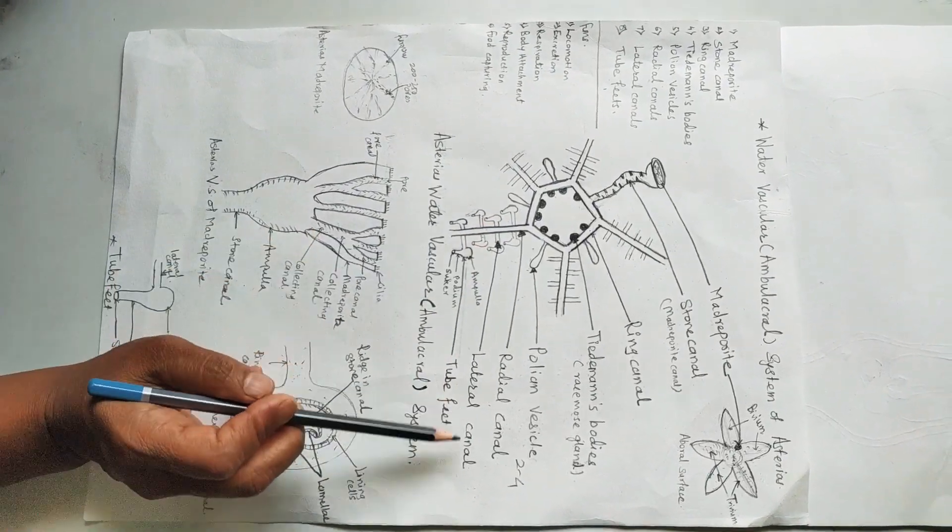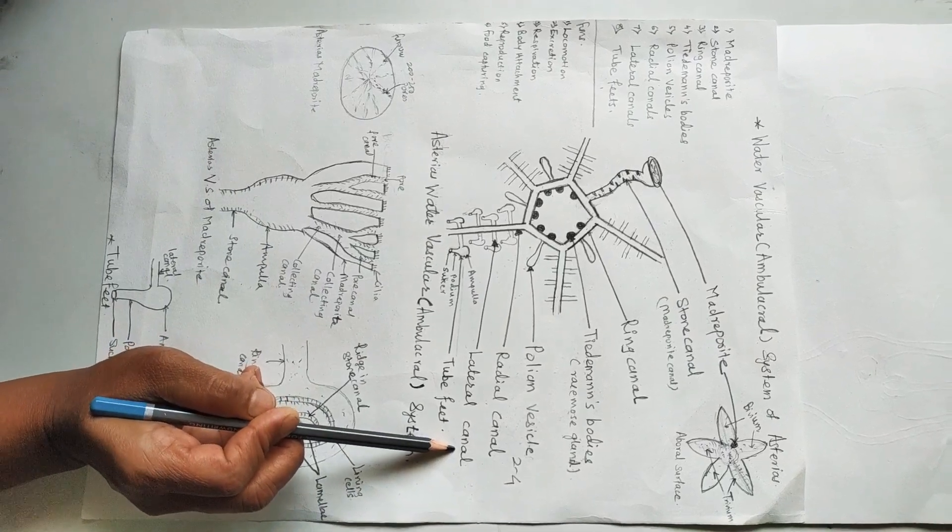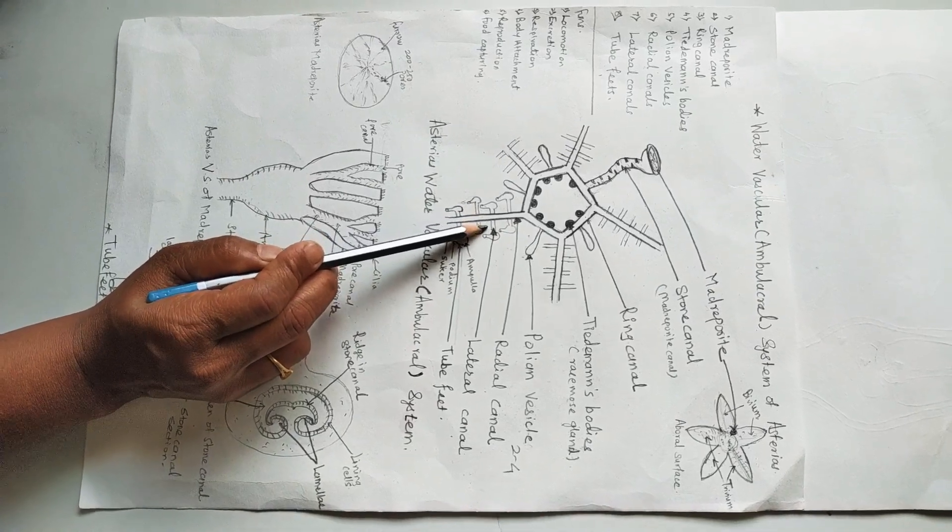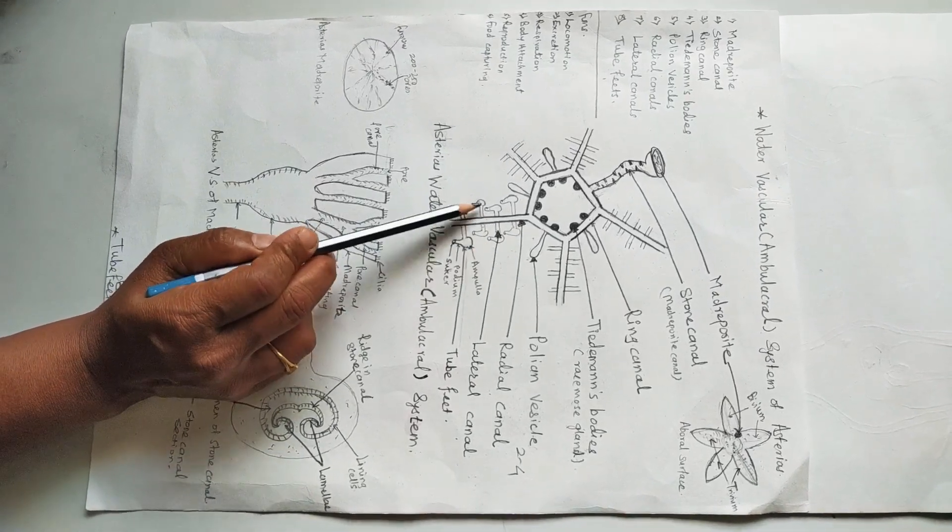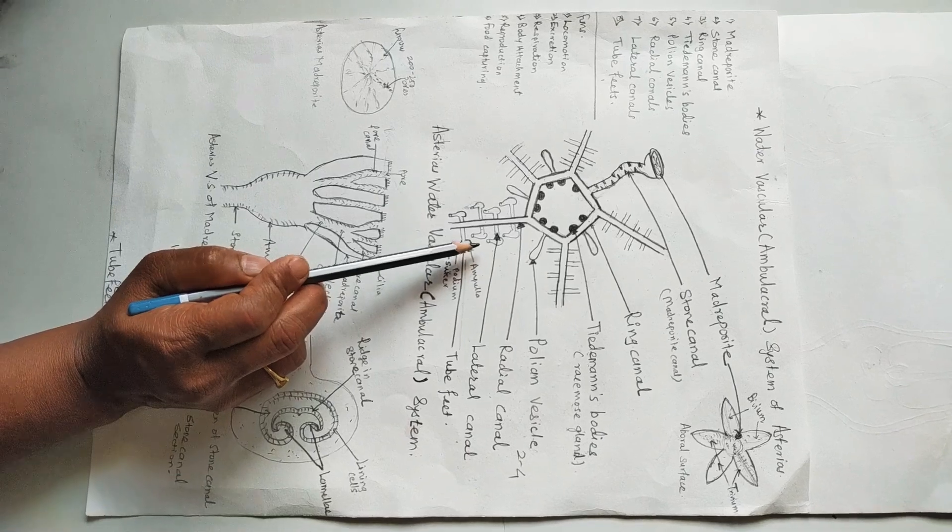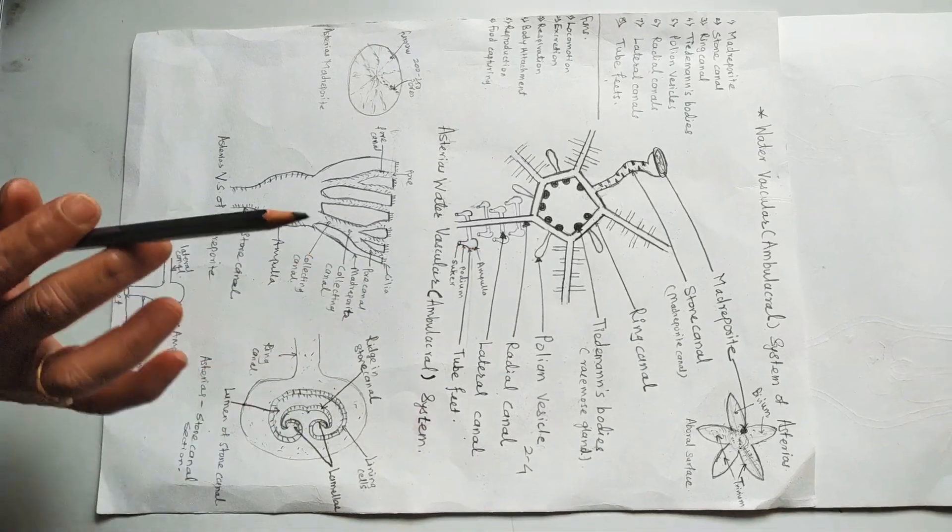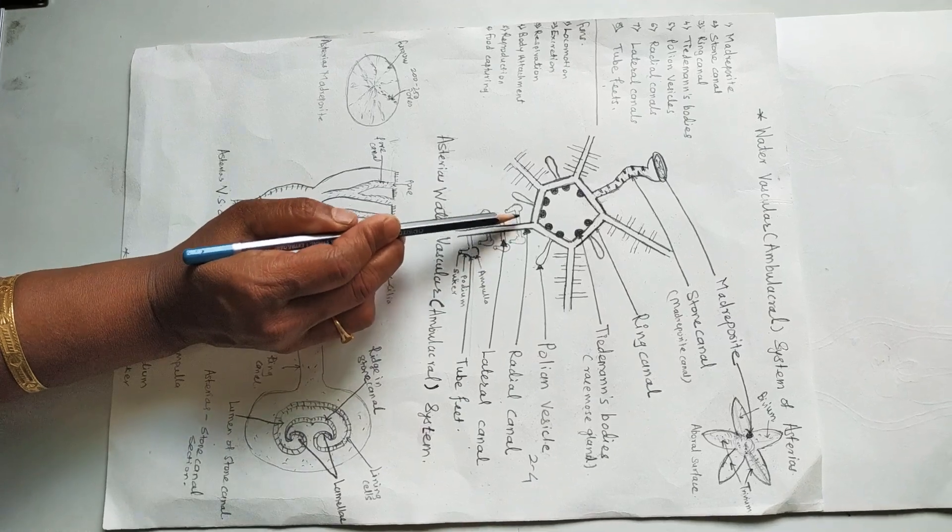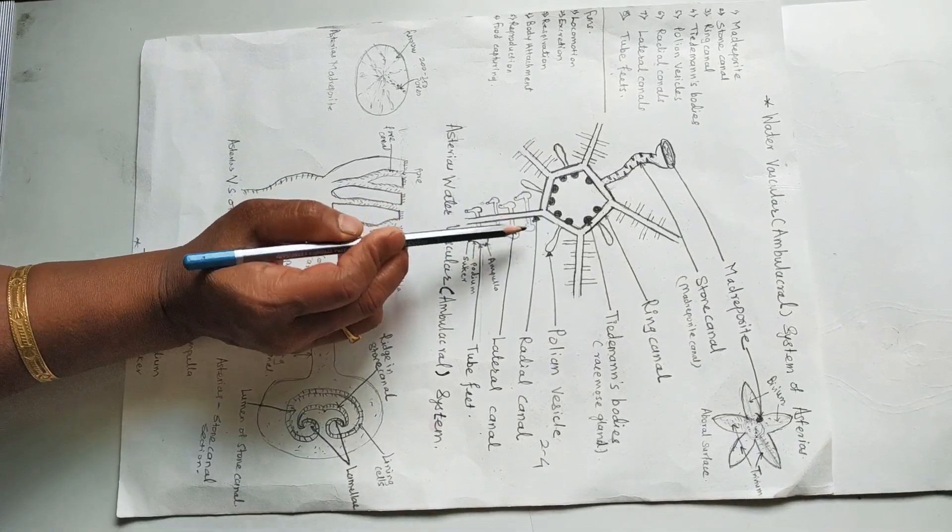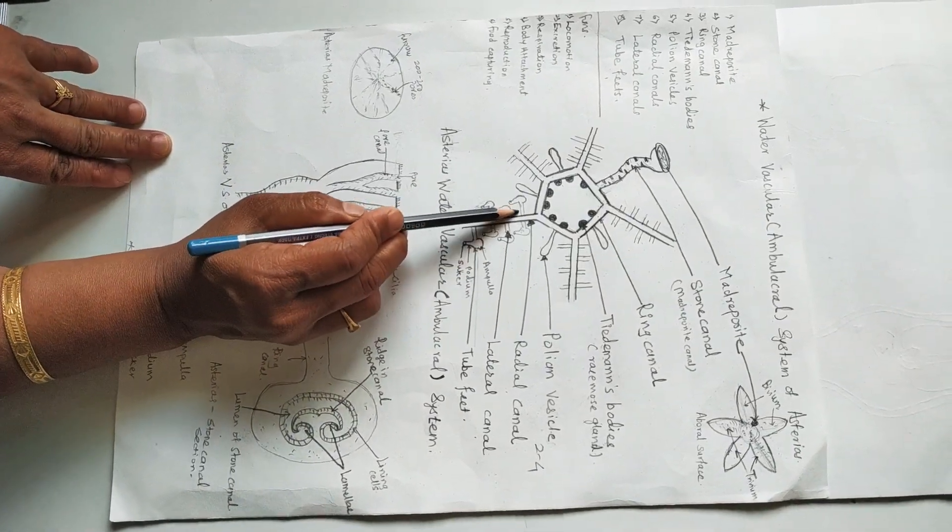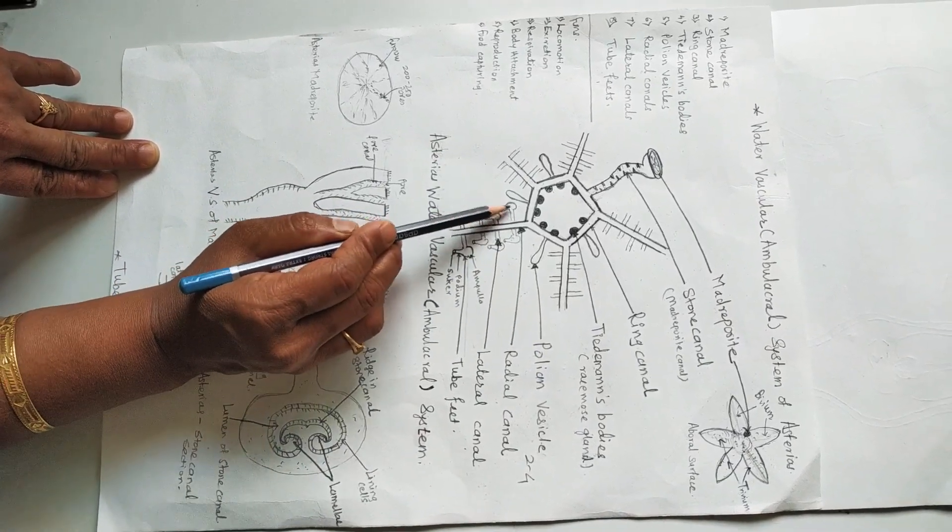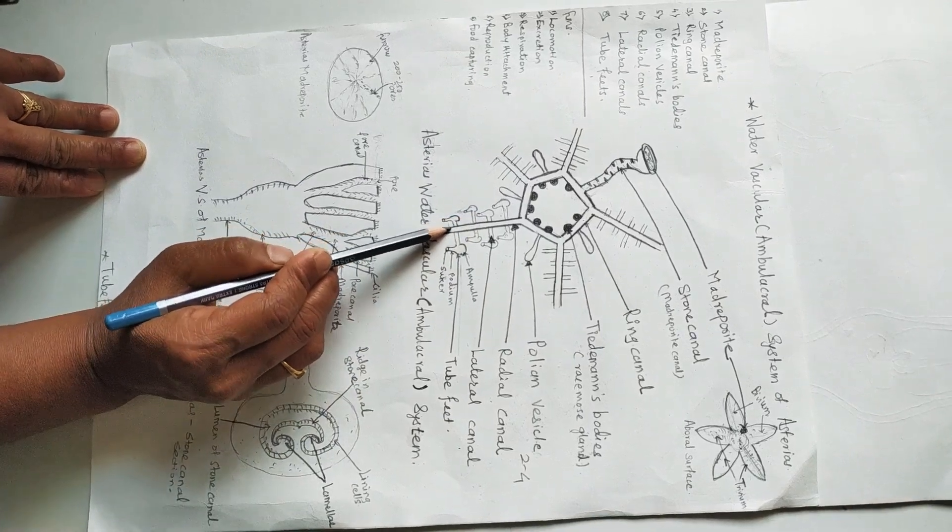Next structure is the lateral canal. During the course of the radial canal, it gives off on either side small ducts or canals. They are about short and long, arranged in two rows. But due to the alternating short and long, they may appear as four rows. One row of long, second row of short, third row of short, and fourth row of long lateral canals.